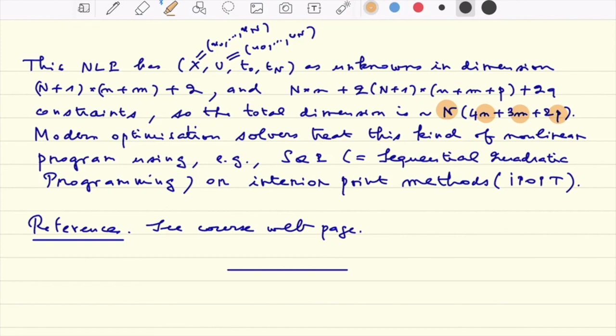The size of the grid points that we have taken, the size of the grid in terms of time points. Modern optimization solvers can deal with this kind of problem, for instance using sequential quadratic programming, the so-called SQP method, or interior point methods such as IPOPT.